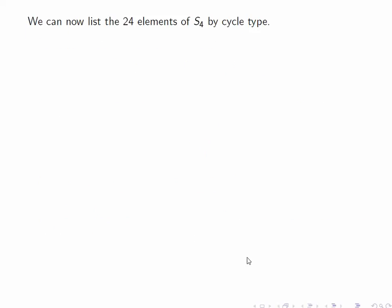Now let's look at S4, which is a slightly more complicated group. It has 24 elements, 4 factorial elements. Let's have a look at what kind of elements they are, and how many of each kind there are.